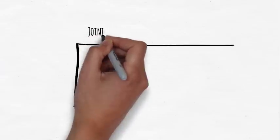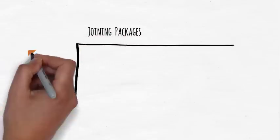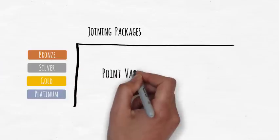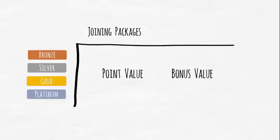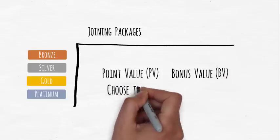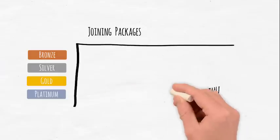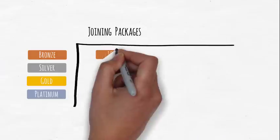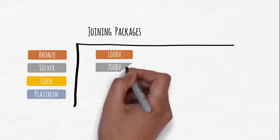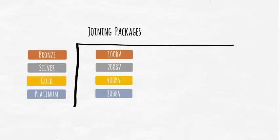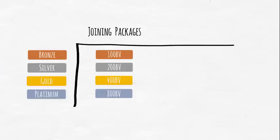Tienz offers four different joining packages. There's bronze, silver, gold, and platinum. Each package and product has an assigned point value, PV, and bonus value, BV. When you join Tienz, you can choose the level of joining that suits you. If you choose a bronze joining package, you are credited with 100 BVs. If you choose silver, it's 200 BVs. By selecting gold, you receive 400 BVs, and with platinum, you receive a whopping 800 BVs.